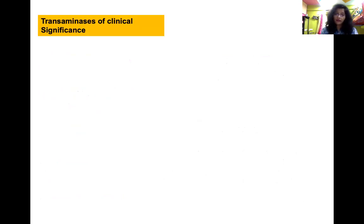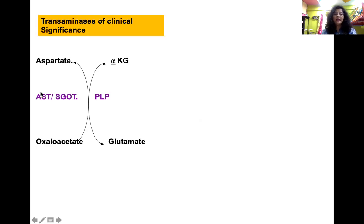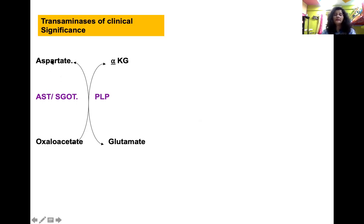Two transaminases are important in clinical practice. First is AST — aspartate transaminase, previously known as SGOT (serum glutamate oxaloacetate transaminase). In this reaction, aspartate donates its amino group to alpha-ketoglutarate to form glutamate and the keto acid oxaloacetate. AST also requires pyridoxal phosphate as a coenzyme.